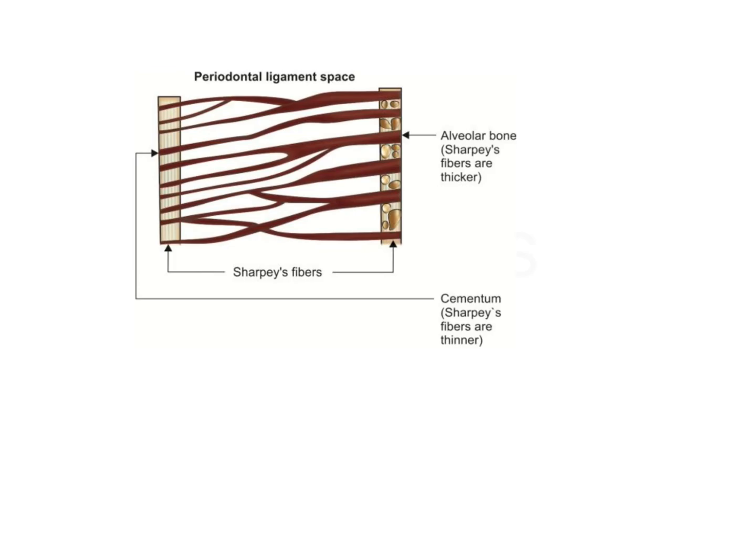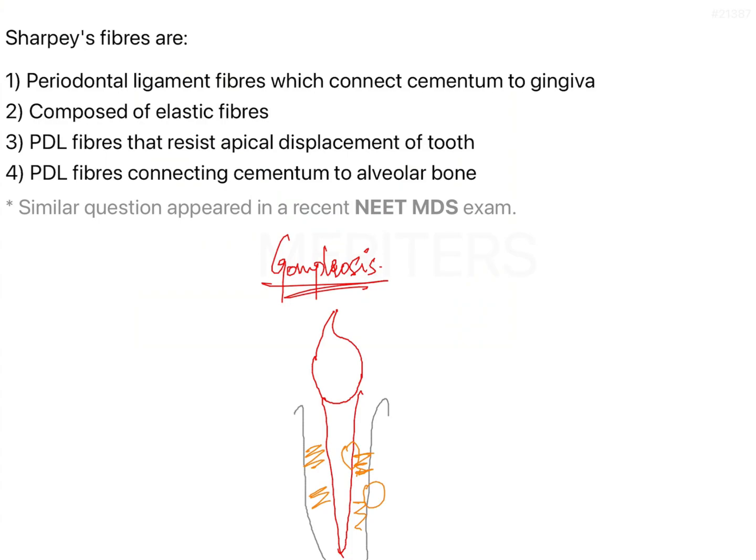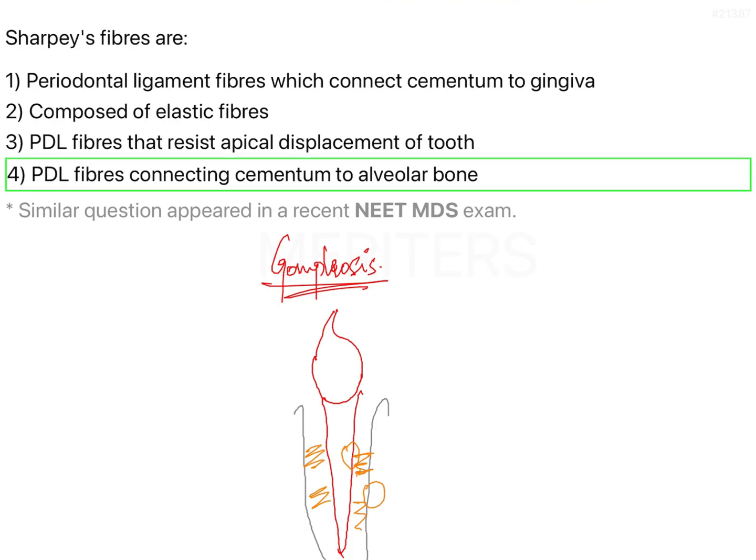That is why the Sharpey's fibers need to provide more anchorage within the bone, and in order to do so they are thicker within the bone compared to the cementum side. Coming to the answer to the question: Sharpey's fibers are PDL fibers connecting the cementum to the alveolar bone.